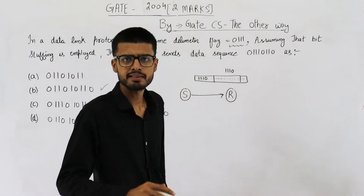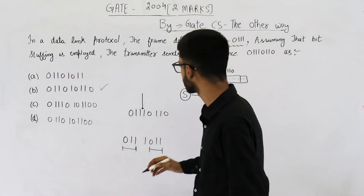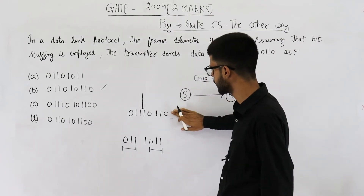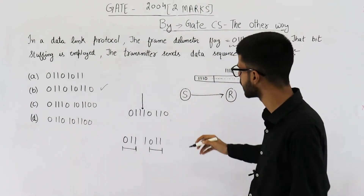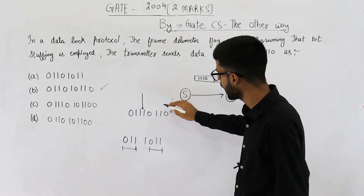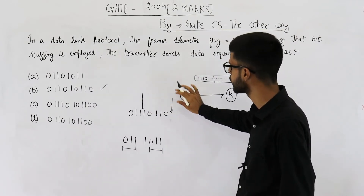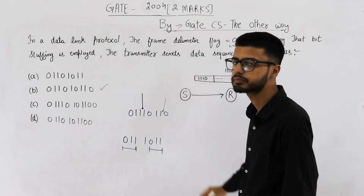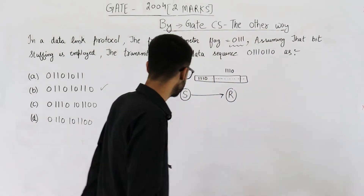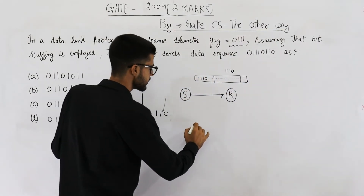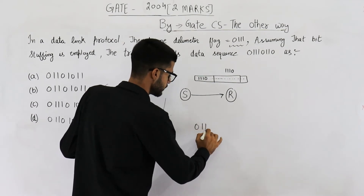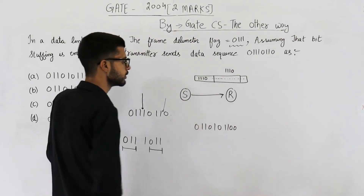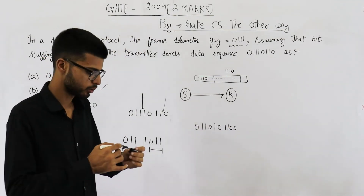The solution is simple. At the sender side, you also add a 0 at the second occurrence. So the data the sender sends will have an extra 0 at both positions. If the sender sends 01110101100, the receiver will handle it correctly.